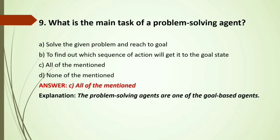MCQ: What is the main task of a problem-solving agent? Options: A) Solve the given problem and reach the goal; B) Find out which sequence of actions will get it to the goal state; C) All of the mentioned; D) None of the mentioned. We need to solve the given problem as option A suggests, but we also need to look out for the sequence of actions as option B states. Answer: All of the mentioned.